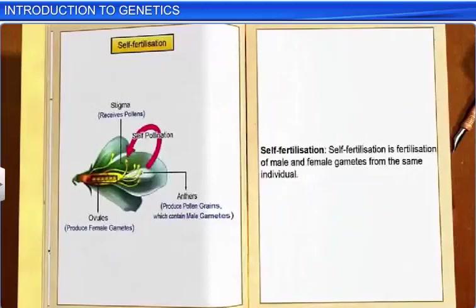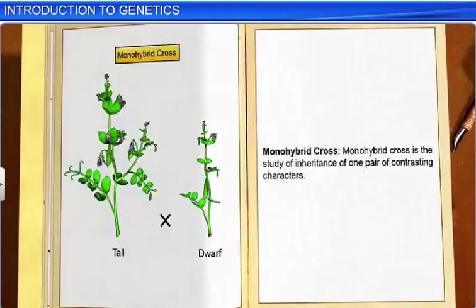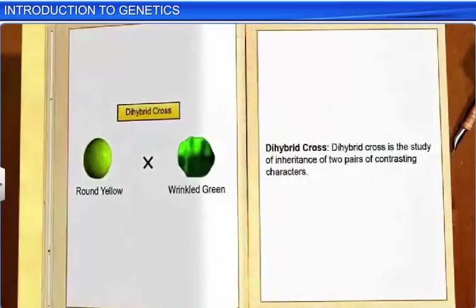Self-fertilization is the term used when fertilization takes place between male and female gametes from the same individual. The study of inheritance of one pair of contrasting characters is known as a monohybrid cross — for example, the study of inheritance of tall and dwarf plants. The study of inheritance of two pairs of contrasting characters is known as a dihybrid cross — for example, the study of inheritance of round and yellow seeds, and wrinkled and green seeds.